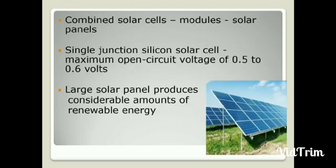Combined solar cells form modules or solar panels. Single junction silicon solar cells show open circuit voltage of 0.5 to 0.6 volts. Large solar panels produce considerable amounts of renewable energy.